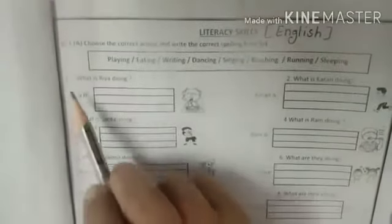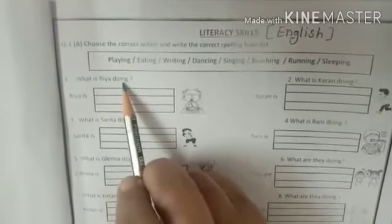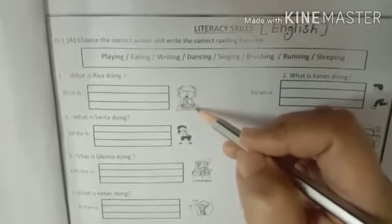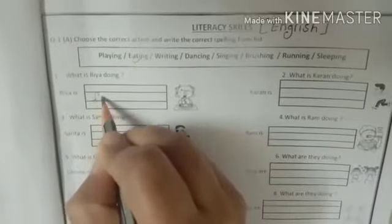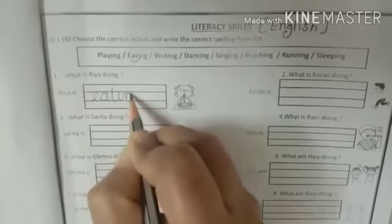First question is: What is Ria doing? Ria kya kar rahi hai? Look at the picture. What is Ria doing? Ria is eating, khana kha rahi hai. So Ria is eating. Here is eating spelling: E-A-T-I-N-G, eating.